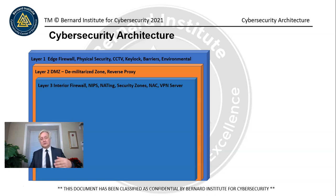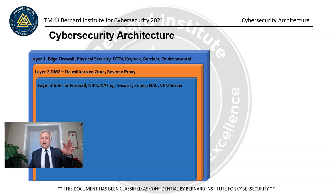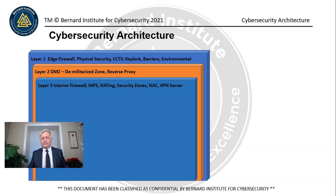This adds another layer of separation from the Internet. We also have security zones — certain systems may be more sensitive than others. For example, we might have a financial system processing accounts and receivables, a data warehouse, or a security team and sales and marketing teams. Each team may have special group profiles, and we add segmentation by creating a security zone.